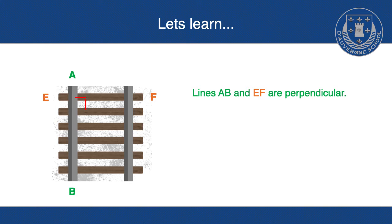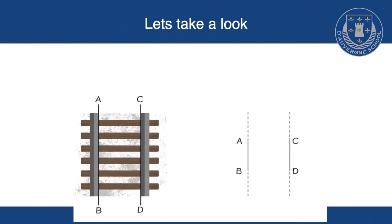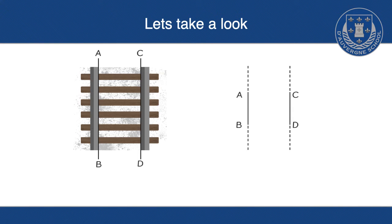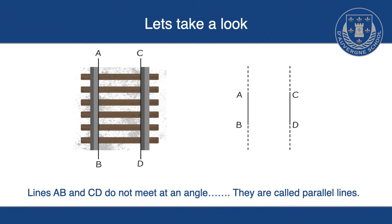How about this? So, we've got line A and B, like we had just, but we've also got another one that runs alongside of it, called C and D. Now, these lines don't meet, do they? They're apart. So therefore, they can't be perpendicular lines. They must be something else. And this is what we call a parallel line.